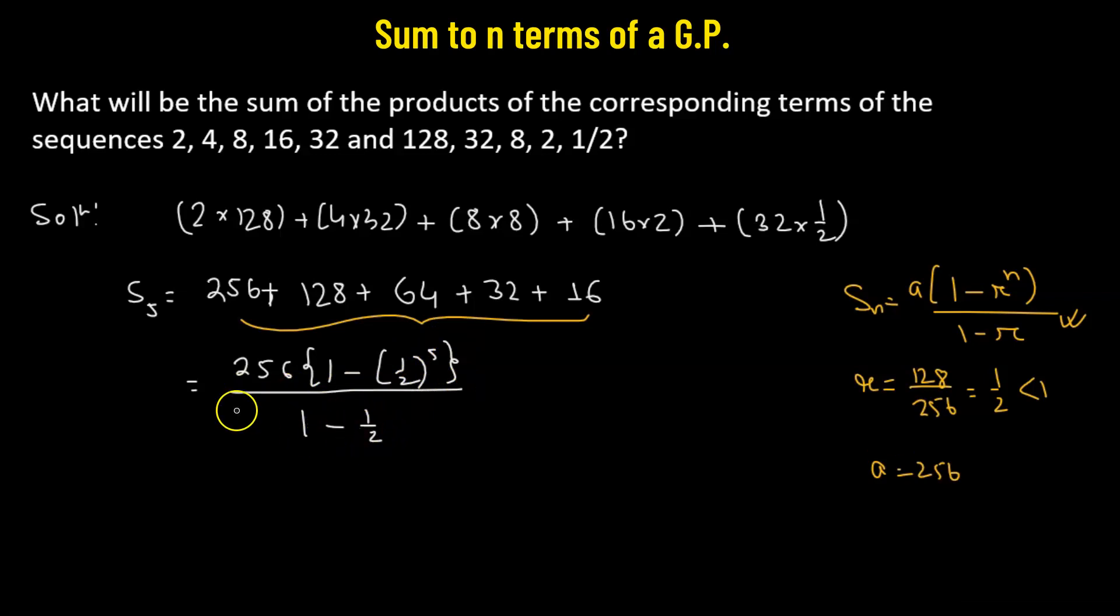So 1 minus half, that's half. So half will go to the numerator and get multiplied with 256. This is going to give us a value of 512, which will be multiplied to 1 minus 1 over 2 raised to the power of 5. So that's 32.